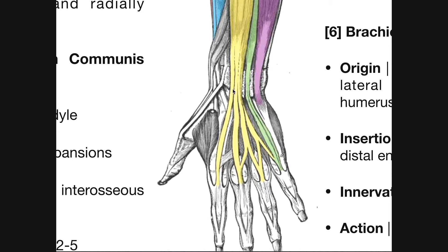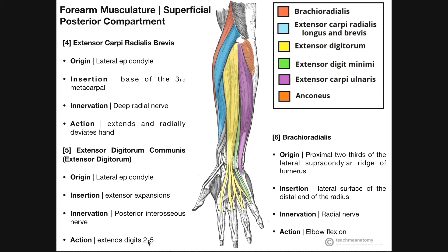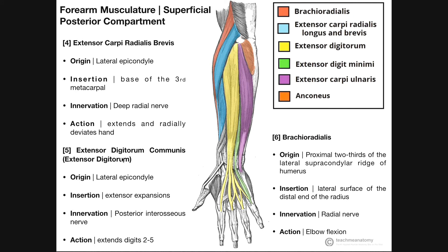Looking at the tendon as it diverges, one part inserts on the extensor expansion of the index finger (digit two), the next goes to three, then four, and the last fuses with the tendon of extensor digiti minimi at digit five. Tendons three, four, and five have tendinous communication that strengthens the pull during finger extension. The muscle extends digits two through five and does not really act at the wrist. It's innervated by the posterior interosseous nerve, just like extensor digiti minimi.